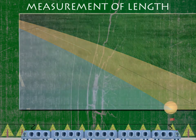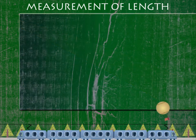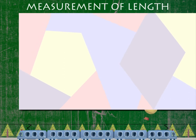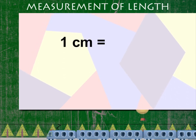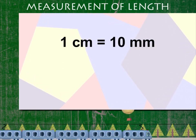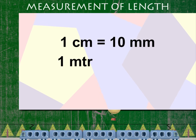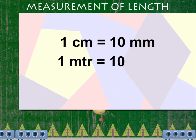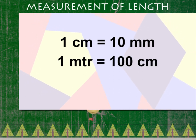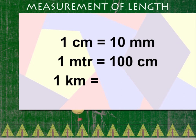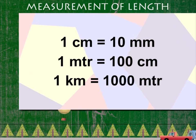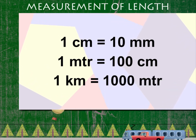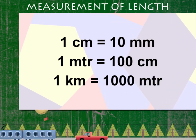Length is measured in centimeters, meters, and kilometers. 1 cm is equal to 10 mm. 1 meter is equal to 100 cm. 1 km is equal to 1000 meters.